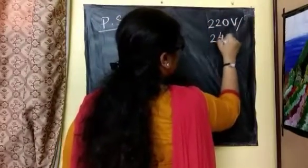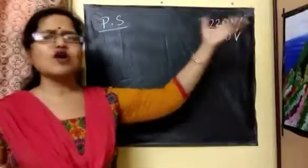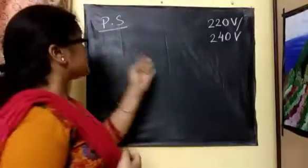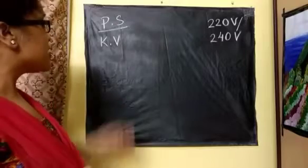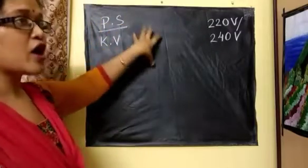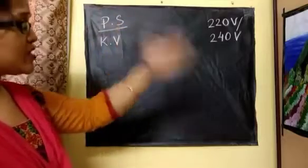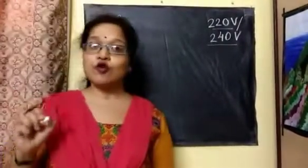From the power station, we are getting electricity in the kilo volt range. But in our homes, what we actually use is generally 220 volt or 240 volt for domestic appliances. In some countries it is 230 volt. So the power station generates electrical energy in the kilo volt range, and after many steps, we get that 240 volt or 220 volt electrical energy.